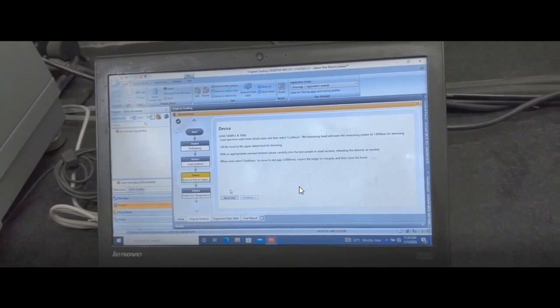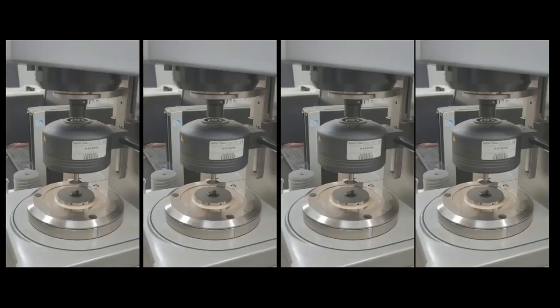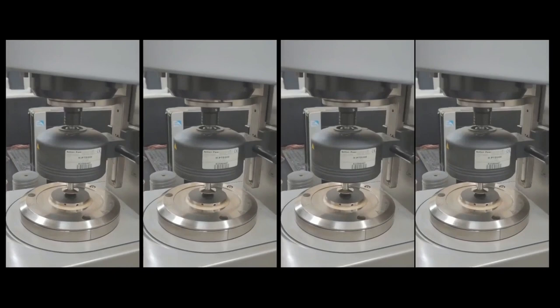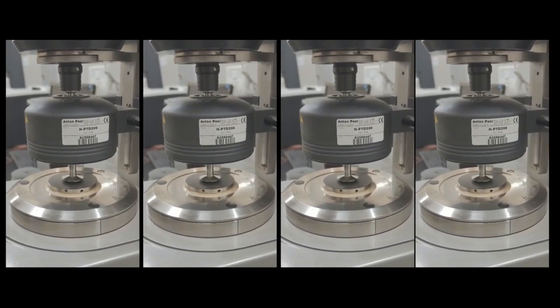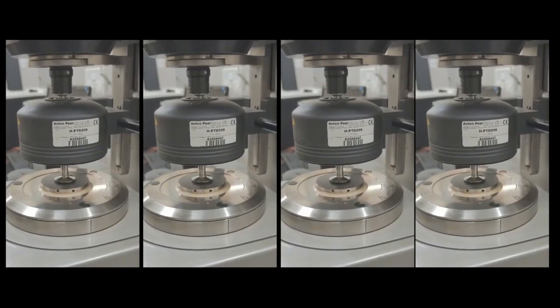Specimen trimming is basically done to get the appropriate thickness of the film between these two plates. So upper plate comes down, it applies pressure here so that you get the correct sample size, and whatever extra bitumen is there it will come out of the plate.